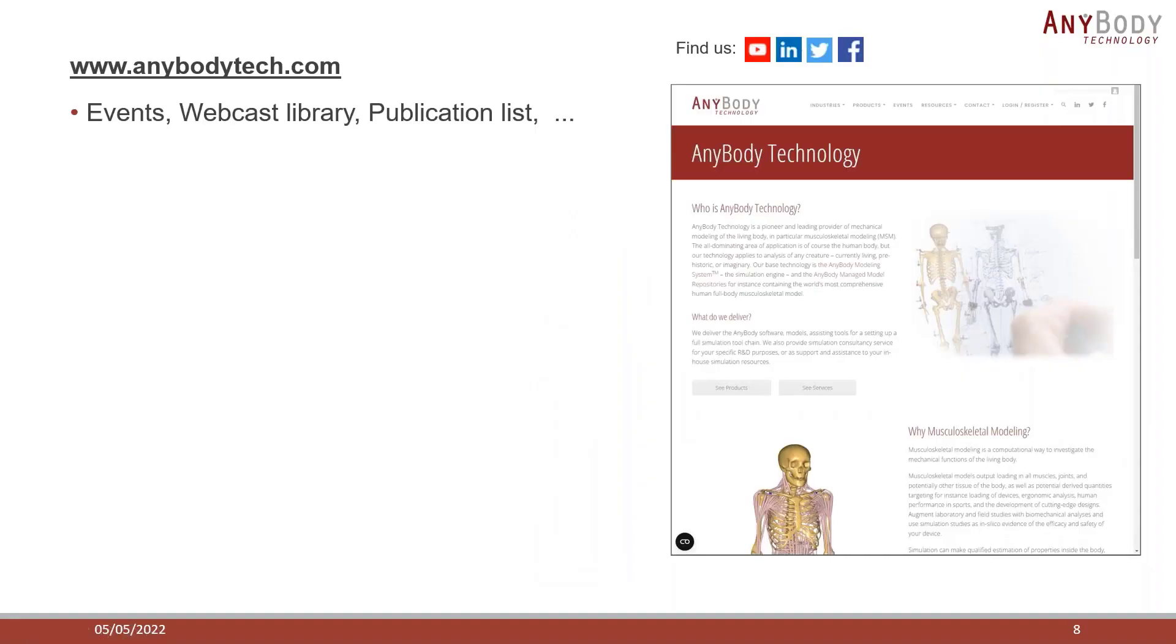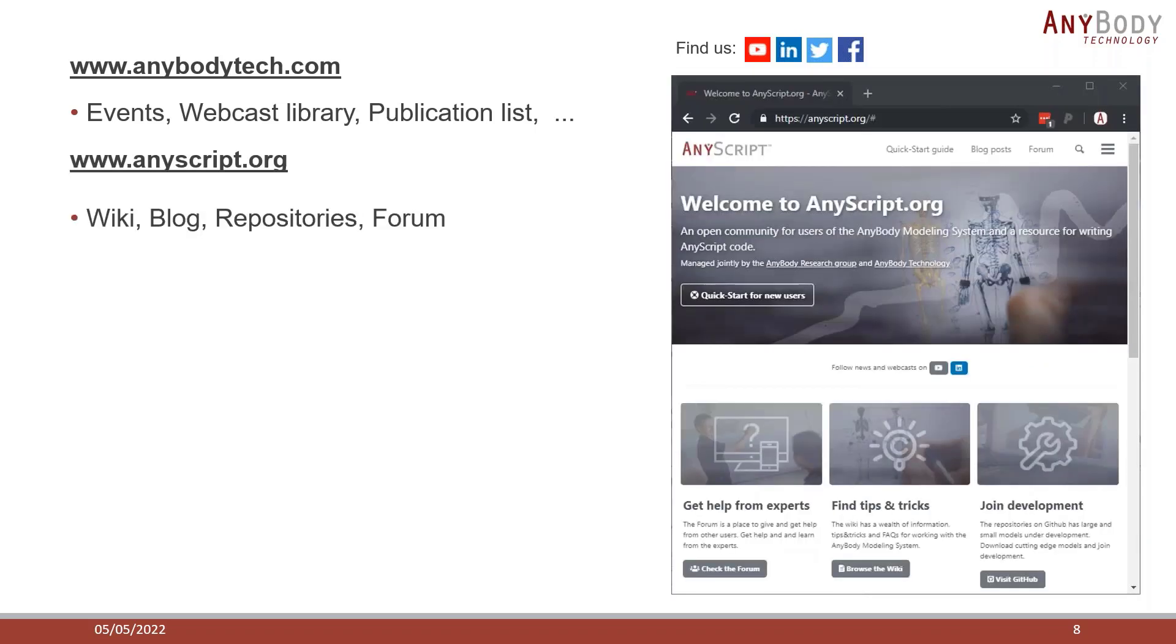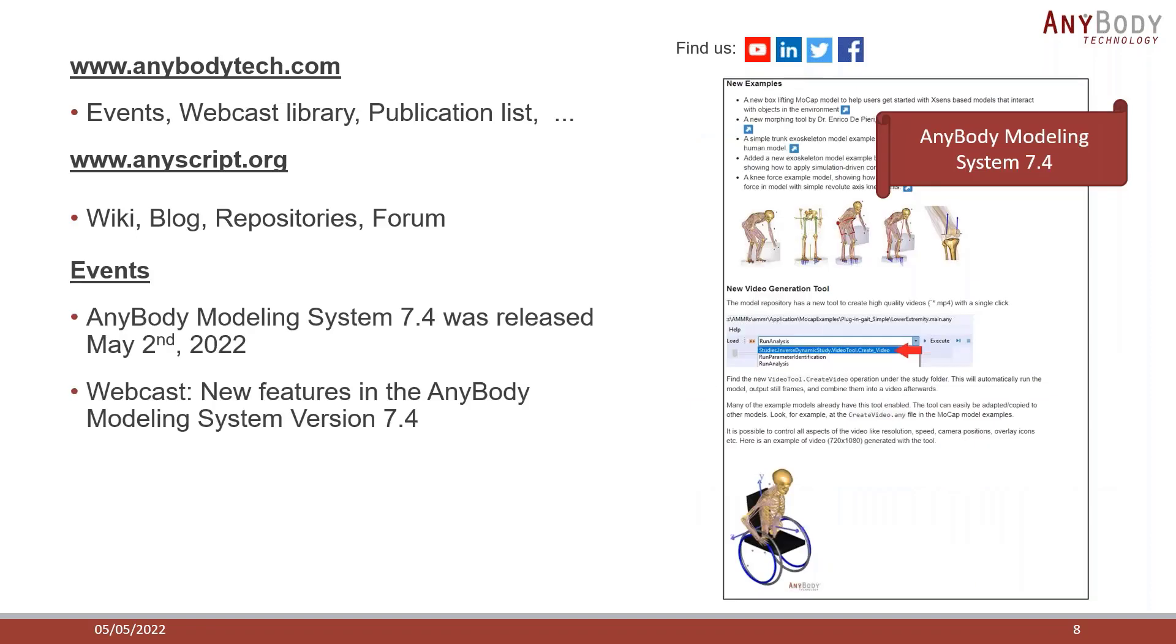If you want to know more about Anybody Technology and our software, you can go and check out our website at anybodytech.com, where you can find different events, special dates, previous webcasts, and also a full publication list of studies using the Anybody Modeling System. You can also check out anyscript.org, which is our community website for people using Anybody. Here you will find multiple online resources as our wiki page, several blog posts, and links to our repository sites. It's also here our forum is located, and you can go and ask questions and get help from some fellow Anybody users.